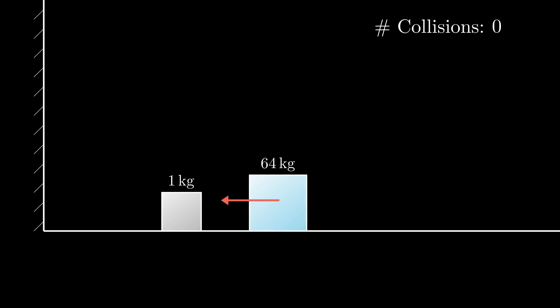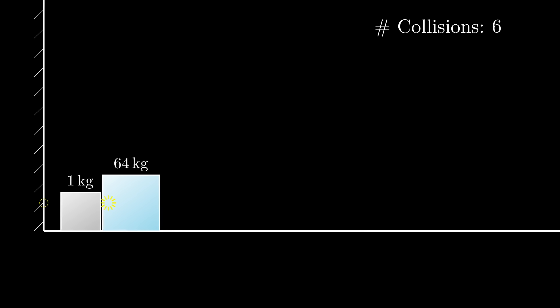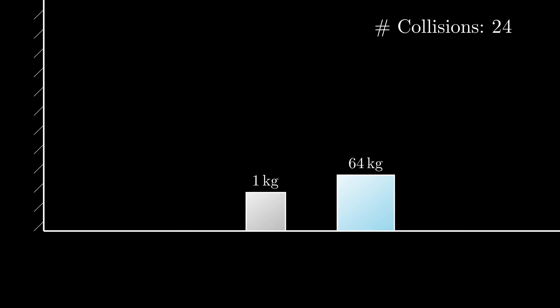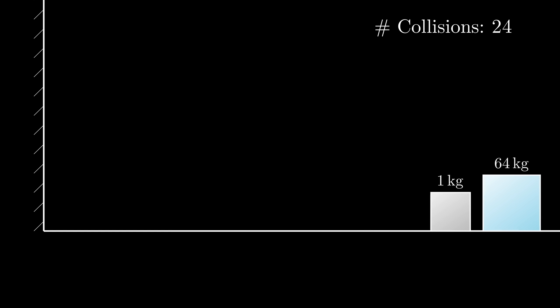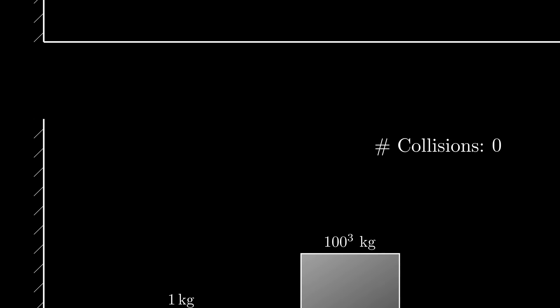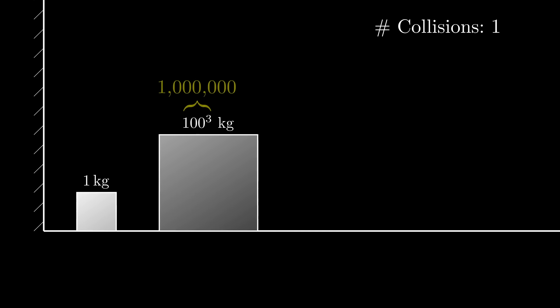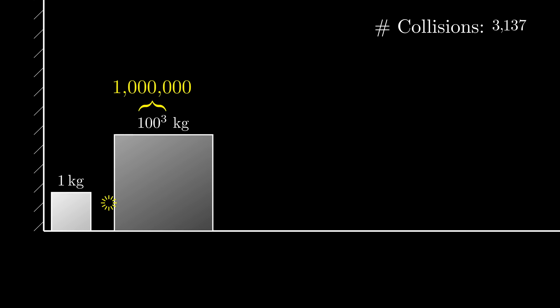One block is sent towards another smaller one, which starts off stationary with a wall behind it, so the smaller block bounces back and forth until it redirects the big block's momentum enough to fully turn around. If that first block has a mass which is a power of 100 times the mass of the second, for example a million times as much, an insanely surprising fact popped out.